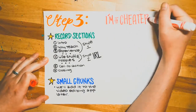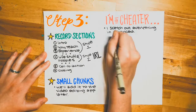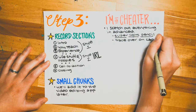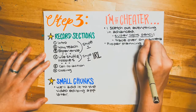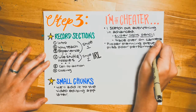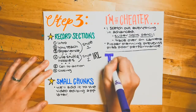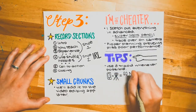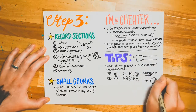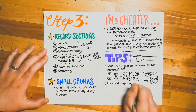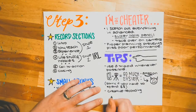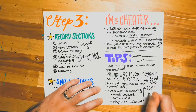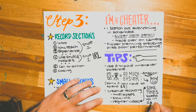Oh, by the way, I'm a total cheater. I sketch out everything in advance in super light pencil to make sure I get it right, then I trace it all over on camera. I do that because proper planning prevents poor performance and I can't actually draw and lay things out at the top of my head. Here are a couple of tips: use a tripod whenever possible — it makes your life so much easier. I bought mine for ten bucks on Amazon, even though Amazon's the devil. Next is creative recording — you can use a variety of things such as time-lapses, slow motion, or regular video. Sometimes I edit regular video and speed it up or slow it down in-app.